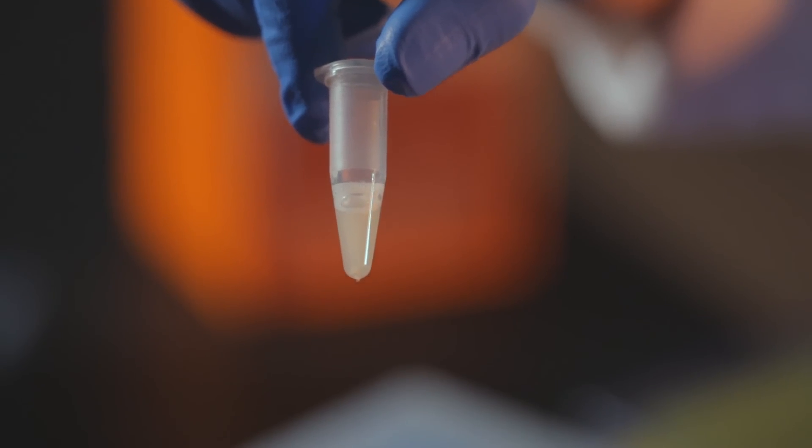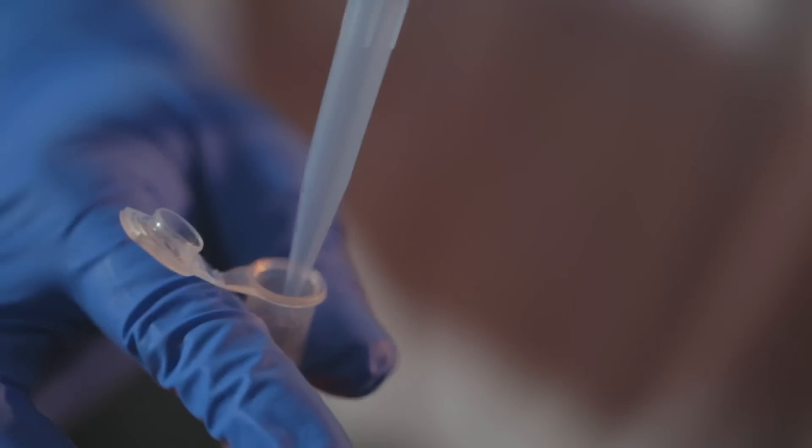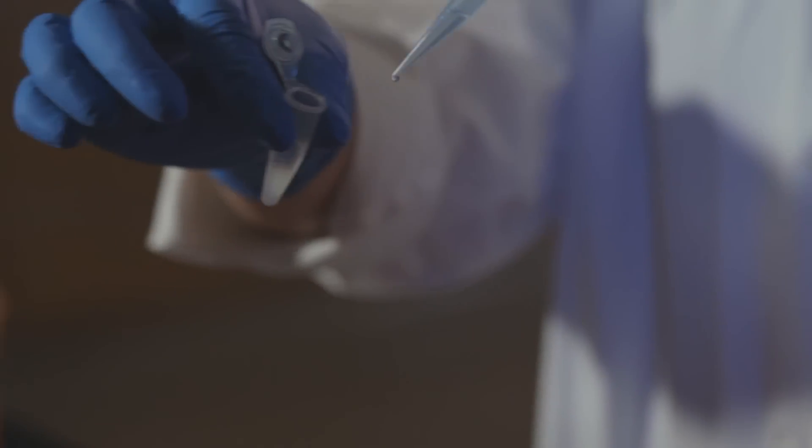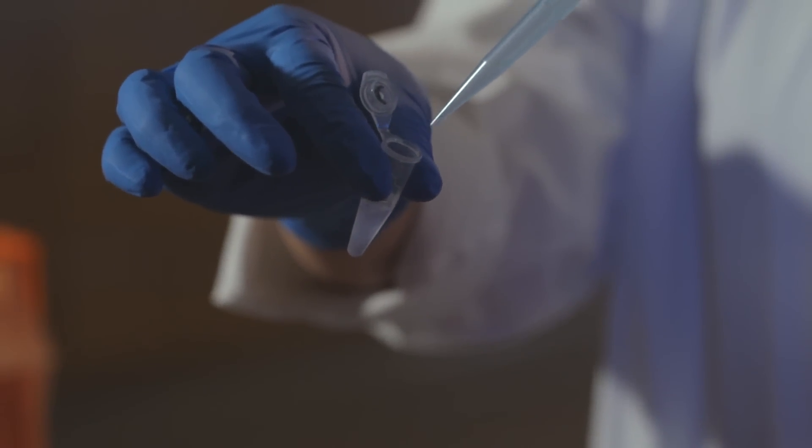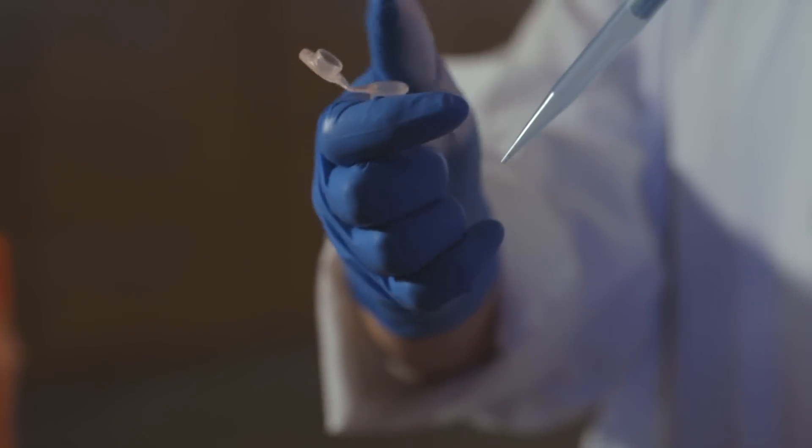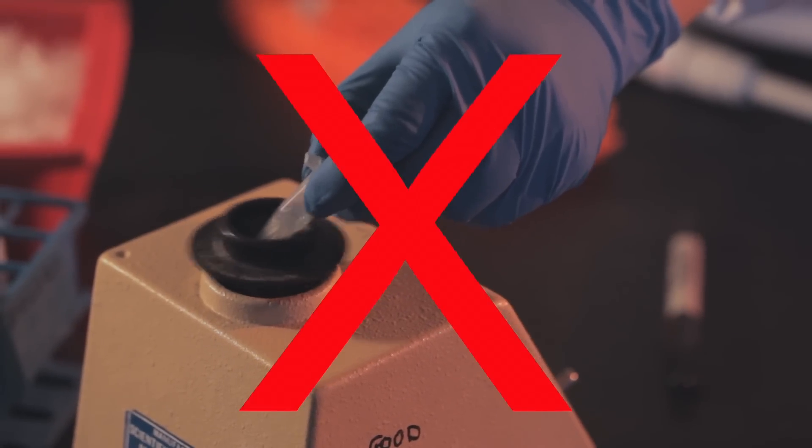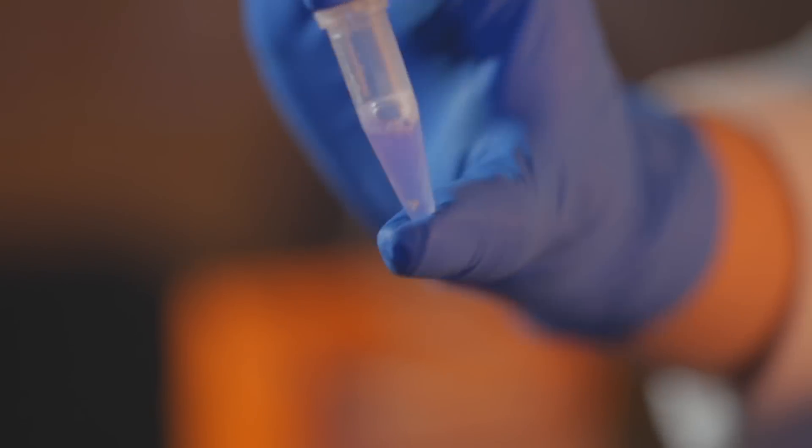Once all of the pellet in your tube has been resuspended, carefully add 250 microliters of the lysis buffer. Mix thoroughly by inverting the tube 4 to 6 times. The solution should become viscous and slightly clear. Do not allow the lysis to continue for more than 5 minutes. Do not vortex at this point, or else the genomic DNA will be sheared into small fragments and will contaminate the plasmid DNA.